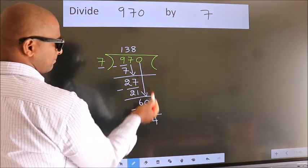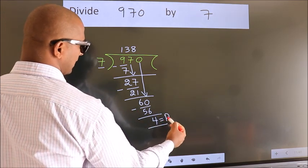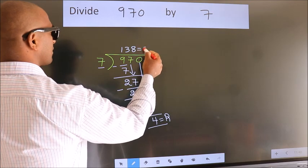No more numbers to bring down. So we stop here. This is our remainder. This is our quotient.